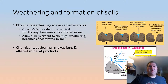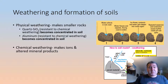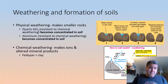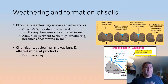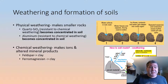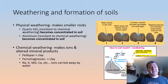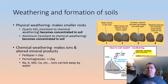Chemical weathering adds to soil by making ions and altered mineral products — namely clays. Many different minerals weather into clays pretty rapidly. Feldspars will go into clays really quickly, and ferromagnesian minerals like biotite and hornblende will turn into clays very easily as well. As these minerals release clay, they also release ions — sodium, potassium, magnesium, calcium, etc. — and these are easily carried away.